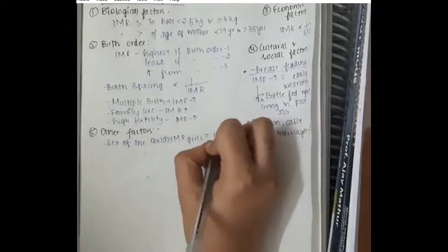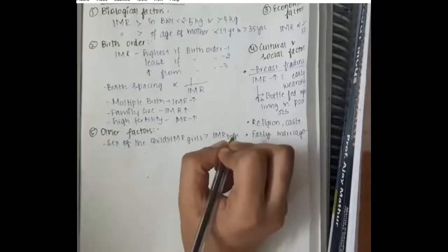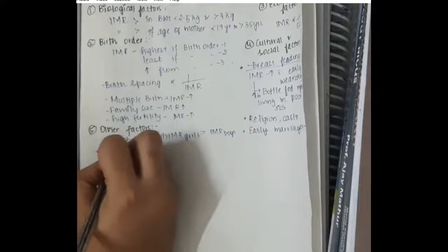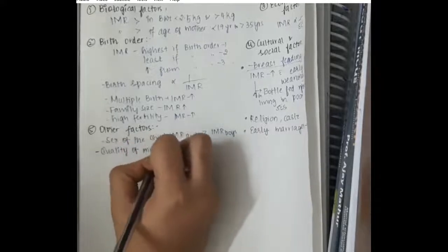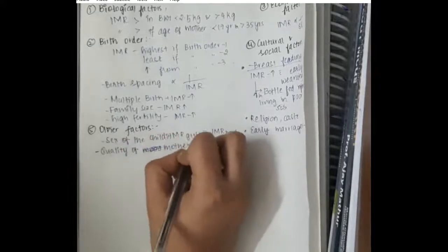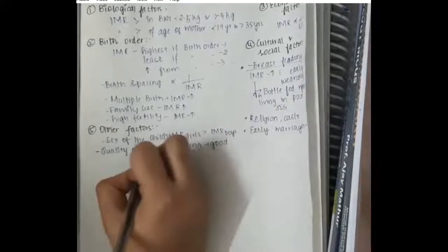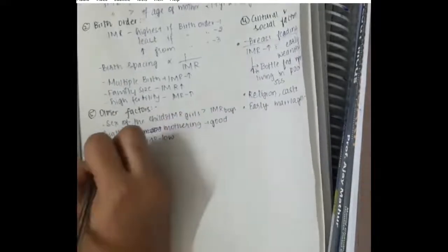Other factors like sex of child: infant mortality rate in girls is more when compared to boys. Quality of mothering is good, then infant mortality rate is low.